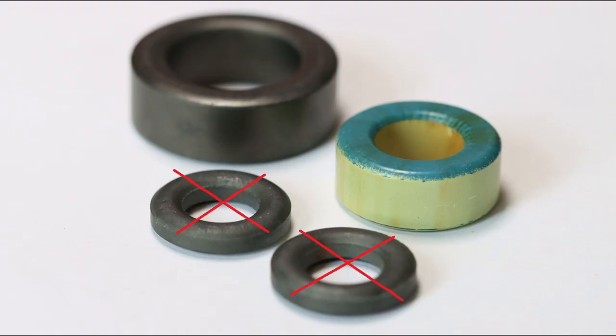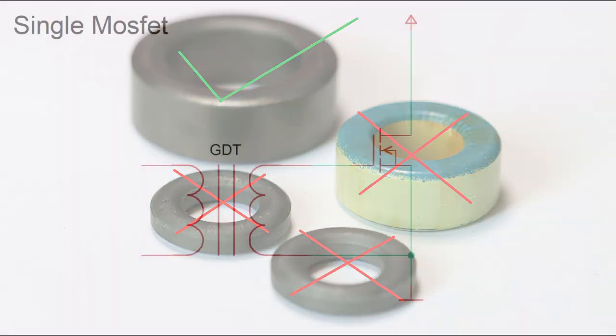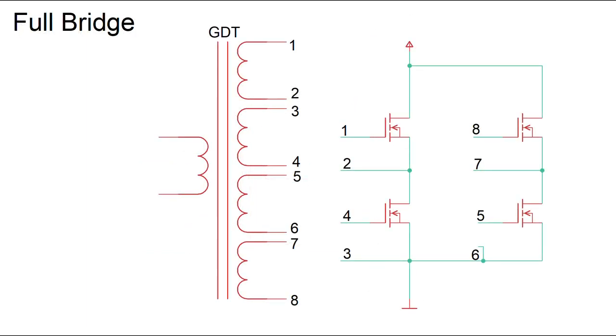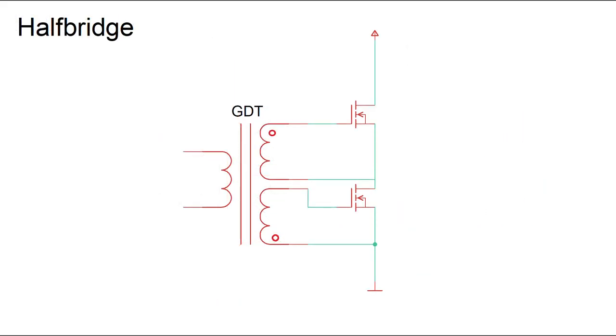If we now have chosen the right core, we can start with winding. First, we have to know how many different windings we need. For a single MOSFET, two windings. For a half bridge, three windings, and for a full bridge, five different windings. Today we decide for a half bridge.